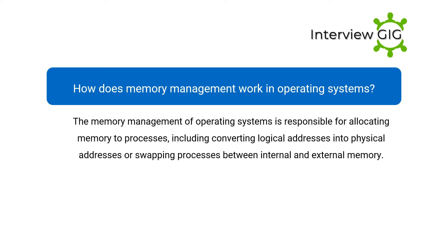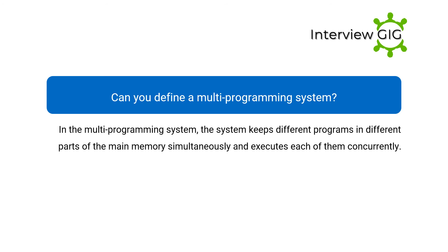How does memory management work in operating systems? The memory management of operating systems is responsible for allocating memory to processes, including converting logical addresses into physical addresses, or swapping processes between internal and external memory.